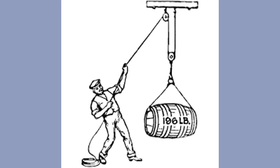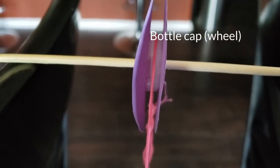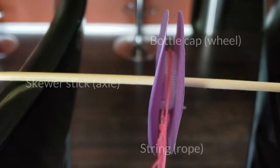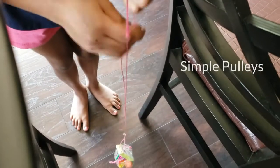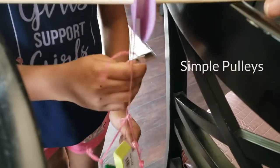A basic pulley, like the one we made, consists of a wheel with a grooved rim, an axle, and rope. Simple pulleys change the direction of force applied to it and don't reduce the force needed to lift the object.